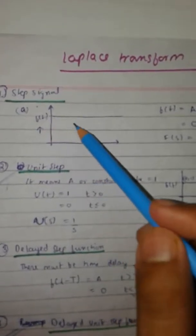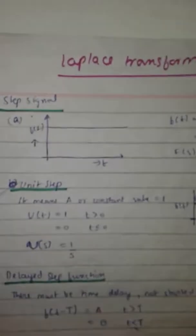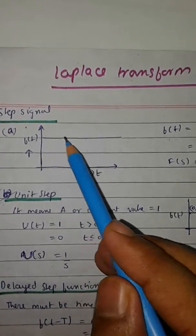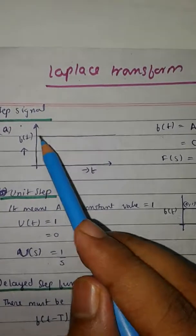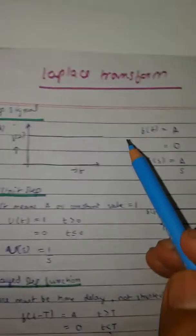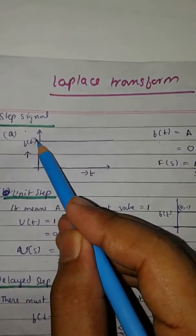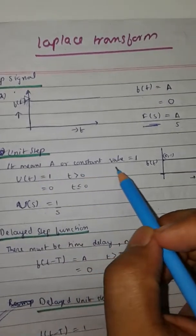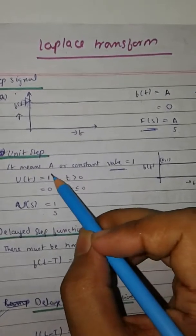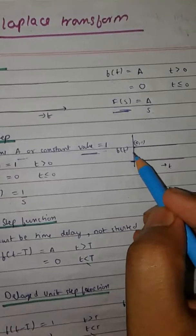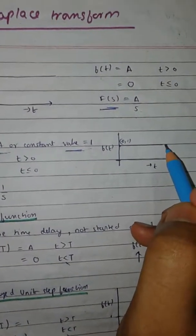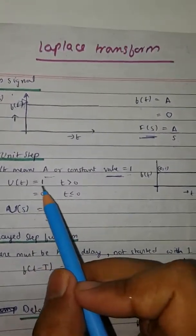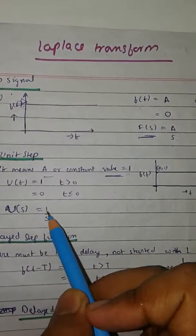This is the step function, or you can say step signal. As you can see, in the step signal it is just a constant line parallel to the x-axis. Its equation: suppose the amplitude is A, so for t greater than or equal to 0 it is A, and for t less than 0 it is 0. Its Laplace is A by s.